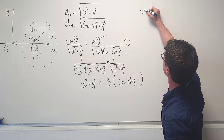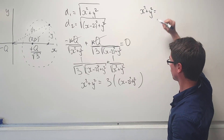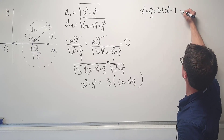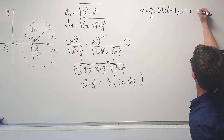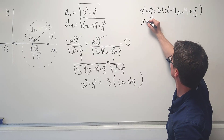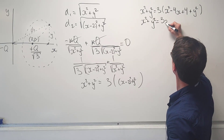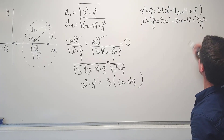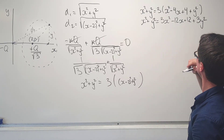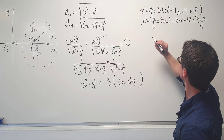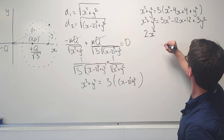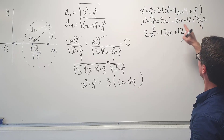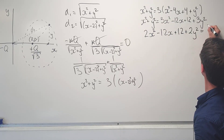Now we're ready to expand. We get x squared plus y squared equals three multiplied by (x minus two) squared plus y squared. Expanding the bracket gives x squared minus four x plus four, so we have x squared plus y squared equals three x squared minus twelve x plus twelve plus three y squared. Bringing everything to one side gives two x squared minus twelve x plus twelve plus two y squared equals zero.